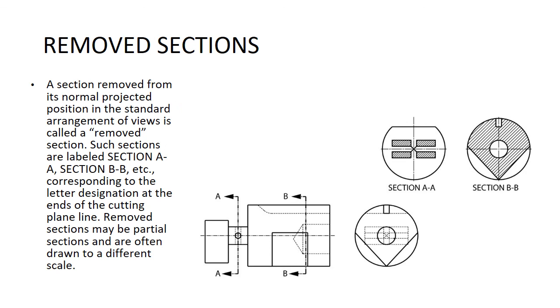Removed section. A removed section is a section removed from its normal projected position in the standard arrangement of views. Such sections are labeled section AA, section BB, etc., corresponding to the letter designation at the ends of the cutting plane line. Removed sections may be partial sections and are often drawn to a different scale.